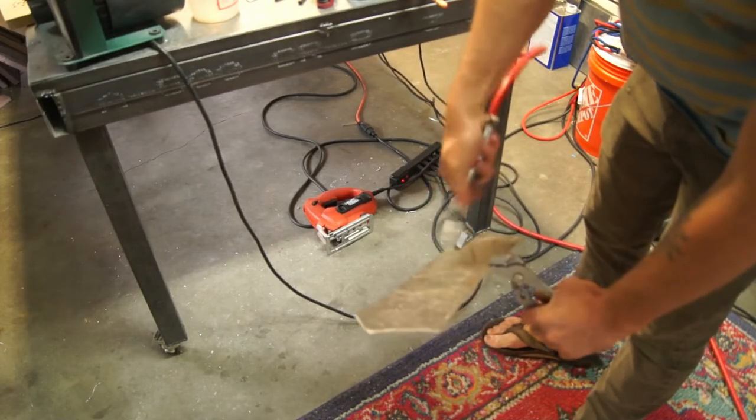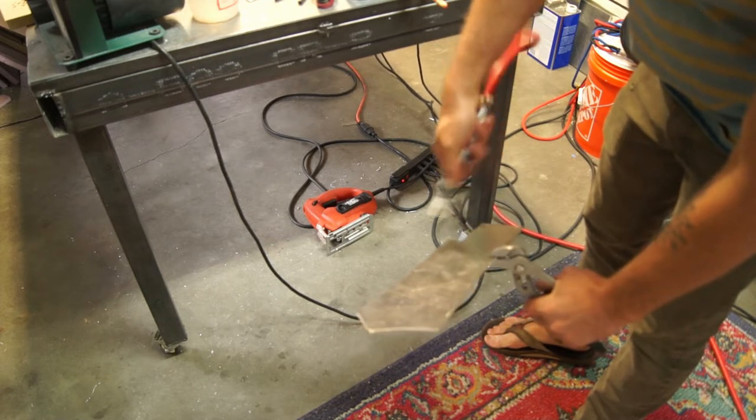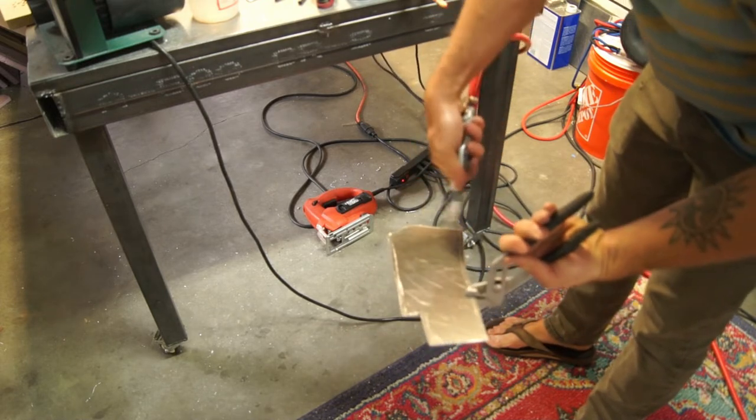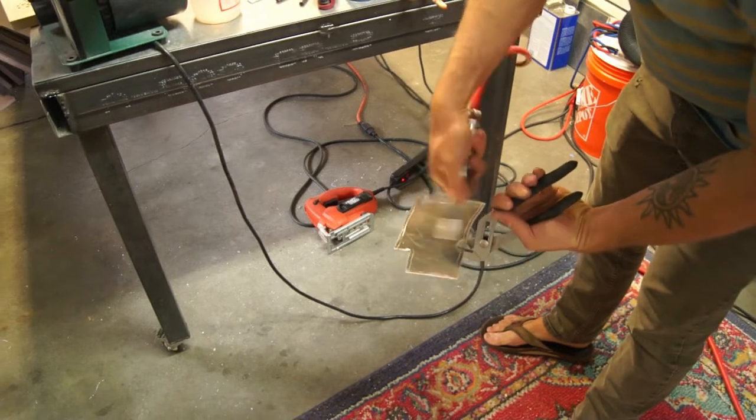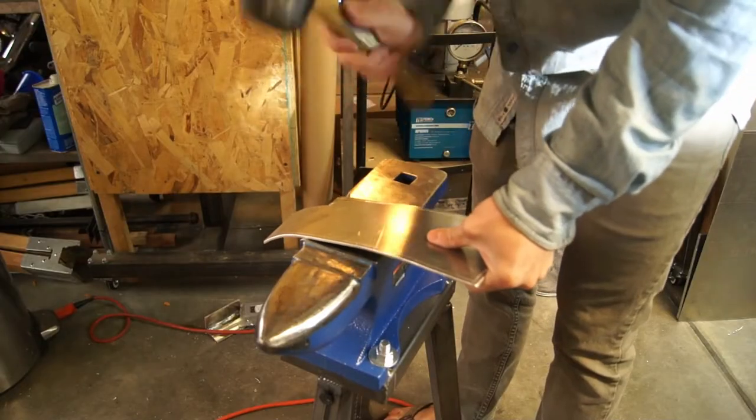So I make it softer - I anneal it so that I can work it easier on the anvil. Now I'm just blowing it off, got to make it dry so it doesn't rust my table, which is just mild steel.